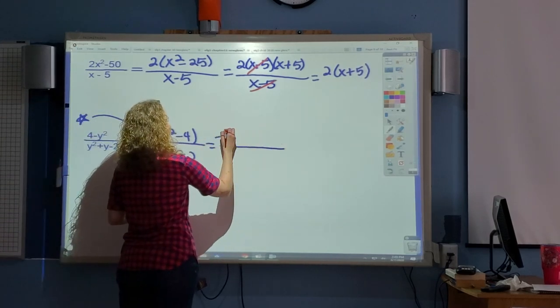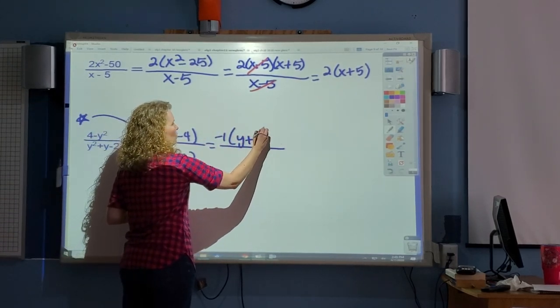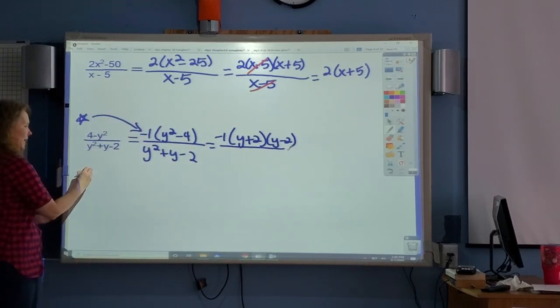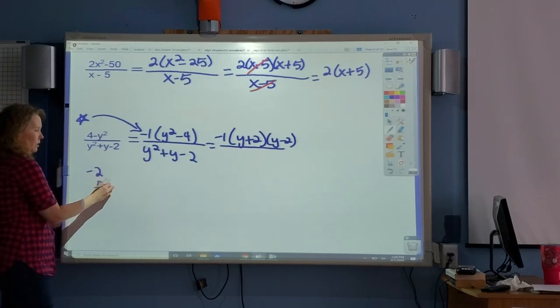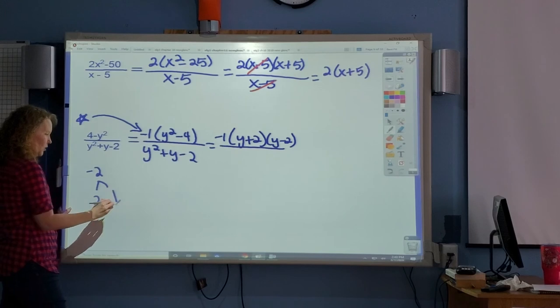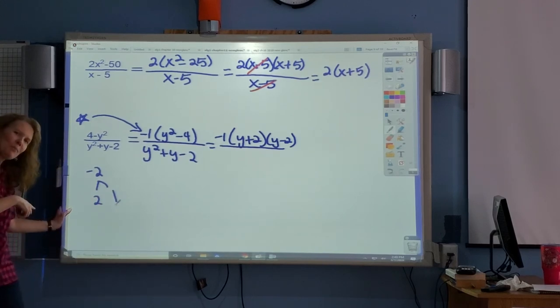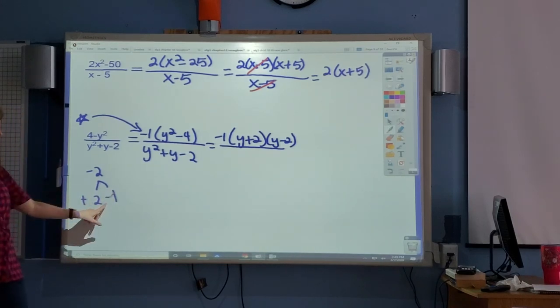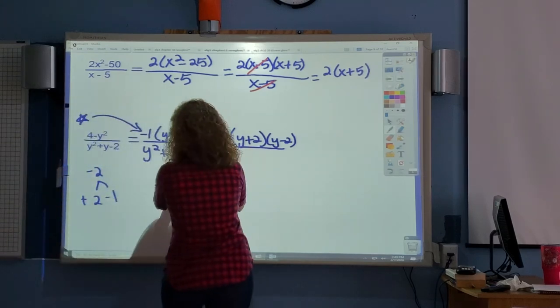So the top, negative 1, y plus 2, y minus 2. The bottom. Factors of negative 2, not many. We're actually going to give you a positive 1. I know it's 2 and 1. Who's positive? Who's negative? 2 is positive. And the 1 is negative. Let's double check. Multiply, do you get negative 2? Add those up. Do you get a positive 1? Yes. So those are the ones we want. We want a y plus 2 and y minus 1.